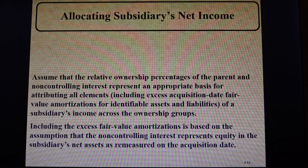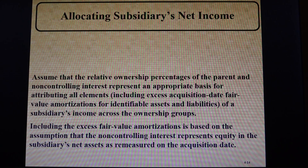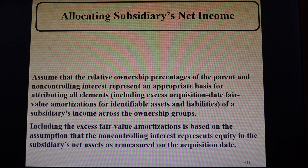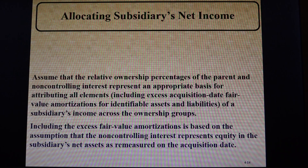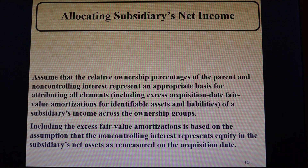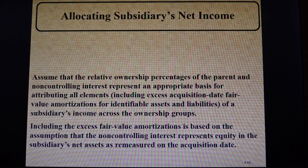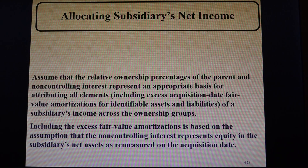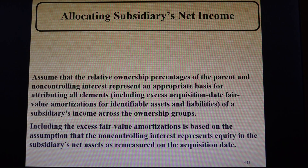The excess fair value amortization basis amortization is based on the assumption that the non-controlling interest represents equity in the subsidiary's net assets as remeasured on the acquisition date. Basically, we're measuring 100 percent of the sub's and parent's net income and adjusting those amounts for excess acquisition date fair value over book value amortizations, as we saw in the last chapter. Barring some other agreement, you're going to allocate the income based upon the ownership interests of the parties.